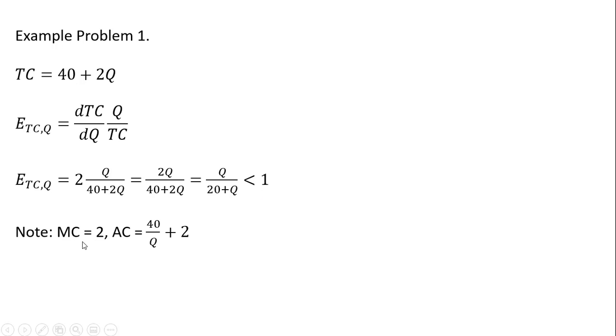One thing to note here is that marginal cost is 2, the derivative of the total cost equation, that's 2. And average cost is the total cost equation divided through by Q. So using our other formulation, marginal cost over average cost is the cost output elasticity. Making our substitutions here, marginal cost, average cost. And then multiplying everything through by Q, the denominator and numerator, you get 2Q divided by 40 plus 2Q, which is exactly what we had in this intermediate step right here.